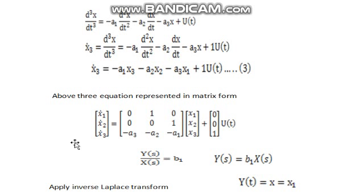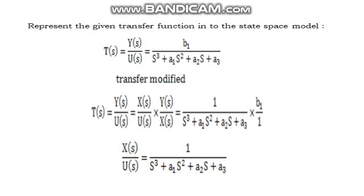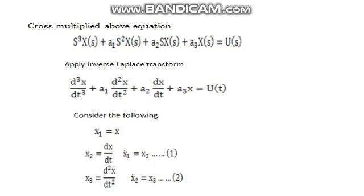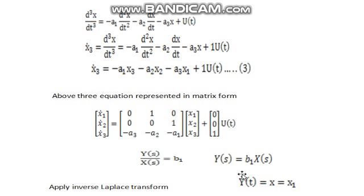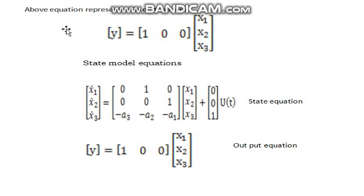For the output equation, from the earlier relation Y(s)/X(s) = b1, we get Y(s) = b1·X(s). Applying the inverse Laplace transform, y(t) = b1·x(t). Since x1 = x, we have y(t) = b1·x1. This can be represented in matrix form as: y = [1, 0, 0] · [x1, x2, x3]ᵀ, confirming y = x1.